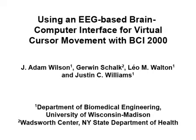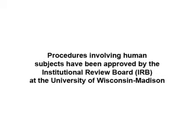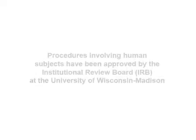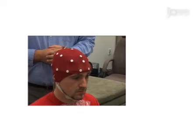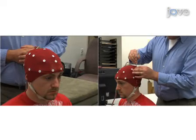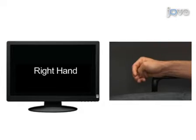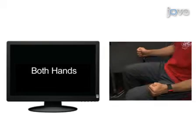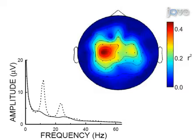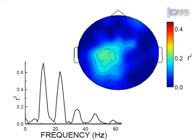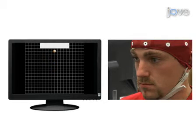A Brain-Computer Interface or BCI functions by translating a neural signal such as the electroencephalogram or EEG into a signal that can be used to control a computer or other device. The procedure begins by attaching the EEG electrode cap to the subject's scalp to record brain activity. The subject is then asked to imagine several voluntary movements with their hands and feet, at which time a calibration procedure is performed which analyzes the characteristics of the EEG. As a result of the calibration procedure, the R-squared values and scalp tomography can be used to determine which electrodes and frequency bins will be used to guide a cursor on the computer screen. Subjects will then be able to move a cursor quickly to target areas just by thinking about it.